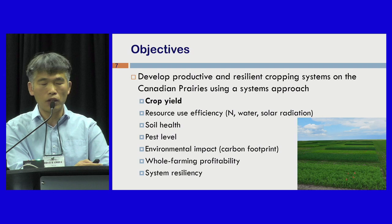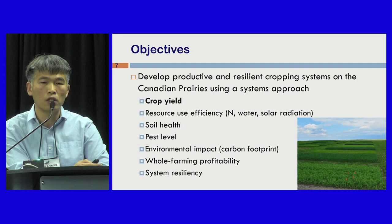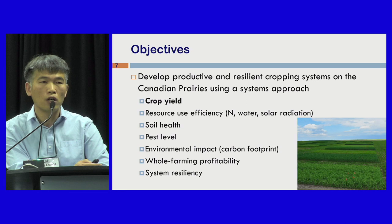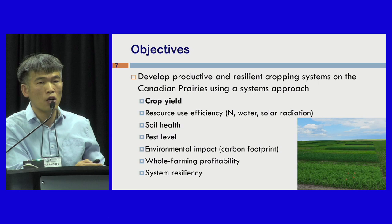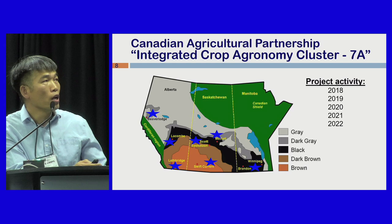When producers design or plan their crop rotation, they have different objectives. We considered those objectives and designed projects to develop productive and resilient Cropping Systems in different eco-zones on the Canadian prairies. We use a systems approach, measuring a whole range of variables. Today I will talk about crop yield. There are three other presentations covering nutrient use efficiency, carbon footprint, and system resilience. My presentation will serve as an introduction for those talks. Most importantly, we will assess the G×E×M interaction at the Cropping System level as part of the systems approach.